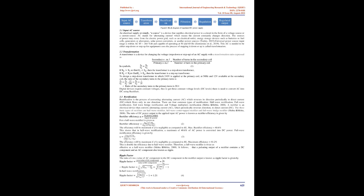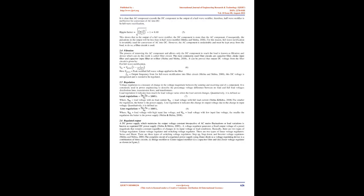A power supply supplies electrical power to a circuit in the form of a voltage source or a current source. AC stands for alternating current, which means the current constantly changes direction. The sources of power may come from the electric power grid such as an electrical outlet, energy storage devices such as batteries or fuel cells, generators or alternators, solar power converters, or another power source. The universal power source input range is within AC 85–264 volts and is capable of operating at 50 and 60 Hz (Cemieni et al., 2019).